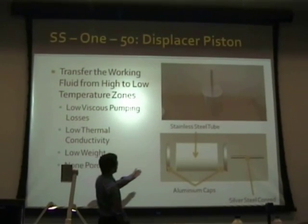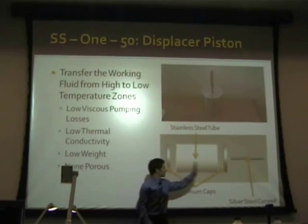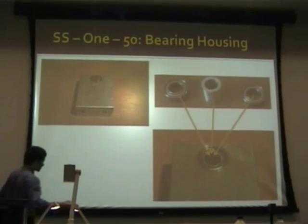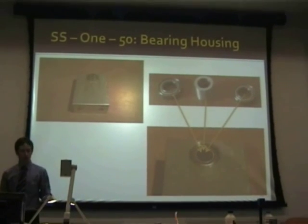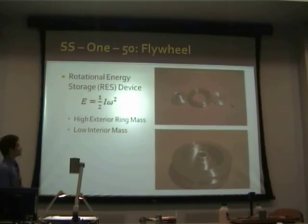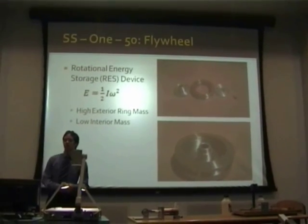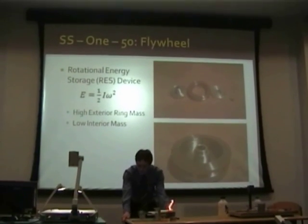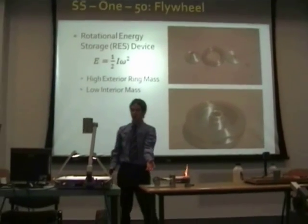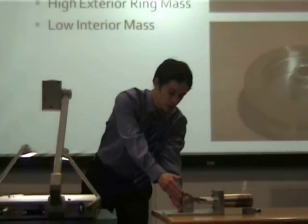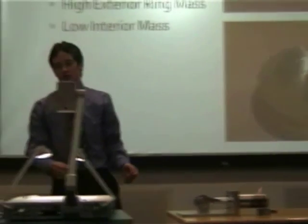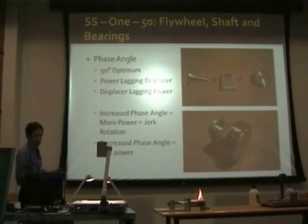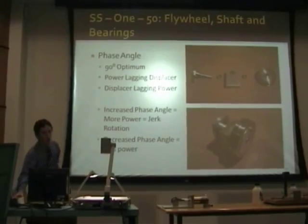My displacer piston design consists of a stainless steel tube supported at both ends by aluminium caps with a silver steel con rod. The bearing housing simply houses the bearings and bearing sleeve which will later house the shaft. The flywheel is a rotational energy storage device — the kinetic energy it can store is proportional to half the rotational moment of inertia times the angular velocity squared. For an ideal flywheel you want high exterior ring mass, using a stainless steel outer ring, and low interior mass — hence aluminium housing for the shaft.